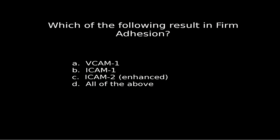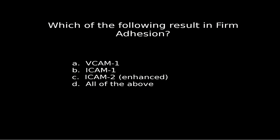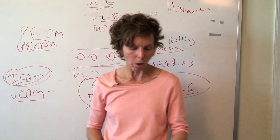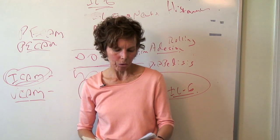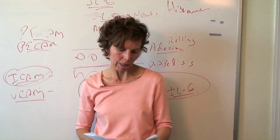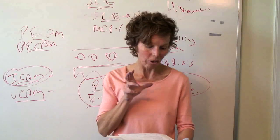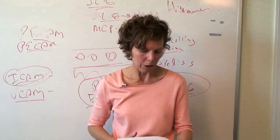Number thirteen: which of the following results in firm adhesion? Those are all of the above — your VCAM, ICAM-1 and ICAM-2. Again, those are where we're looking at drugs; they haven't quite worked this out yet, but if they had, we would have a lot less reperfusion injuries. For example, post-myocardial infarction is why this is such a hot area of research with regard to firm adhesion.